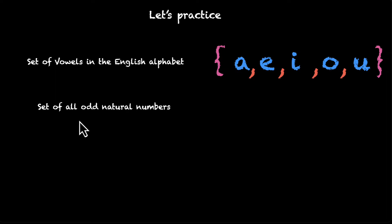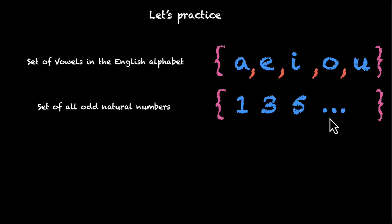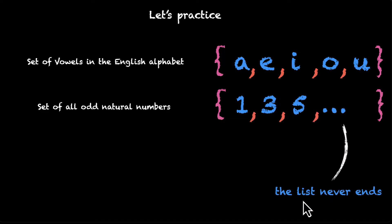Let's look at one more: the set of all odd natural numbers. Again, curly brackets and then the odd natural numbers: 1, 3, 5, and so on. These three dots mean that the list never ends.